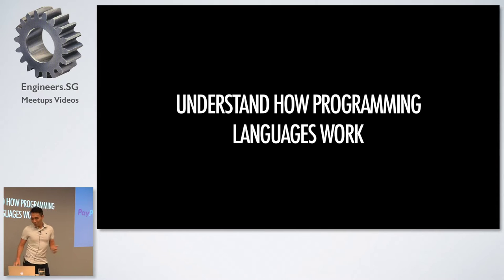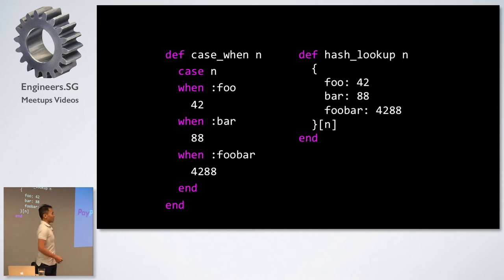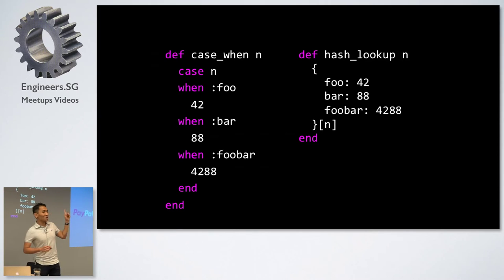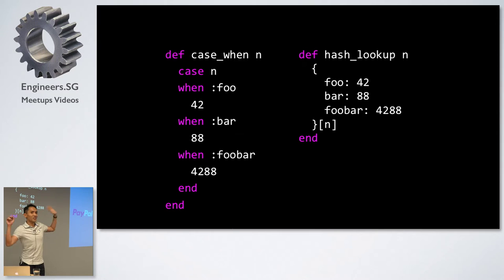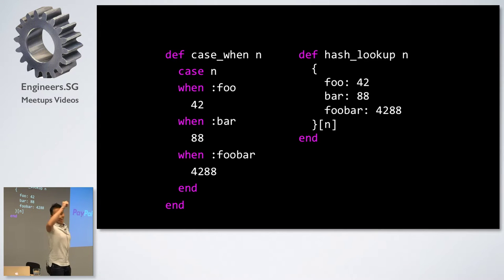You'll be able to answer questions like, what is this error doing in my code? And you'll be able to answer, which of these two code snippets is faster — is it a case-when function or the hash lookup function? Does anyone know? Hash — yes, that's right. Hash is faster. I won't give you a reason why. Go and look it up.